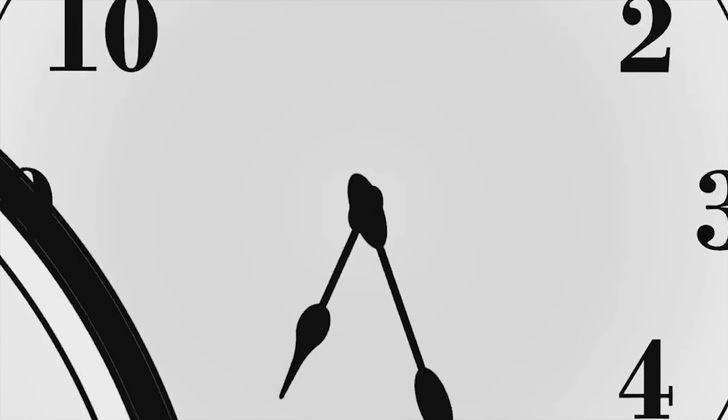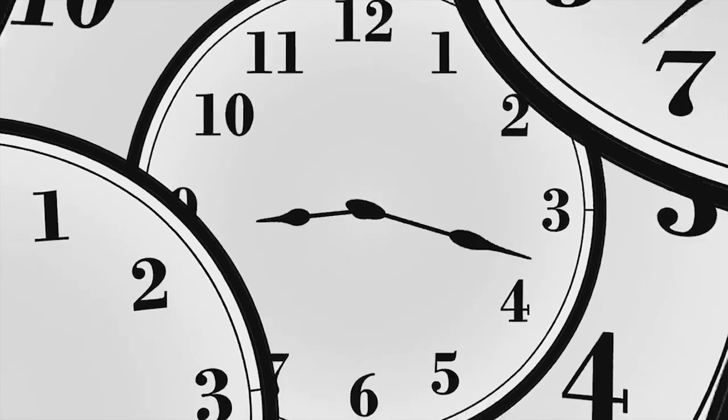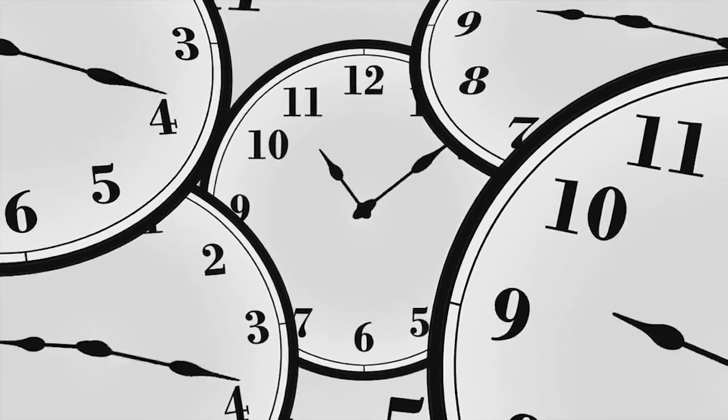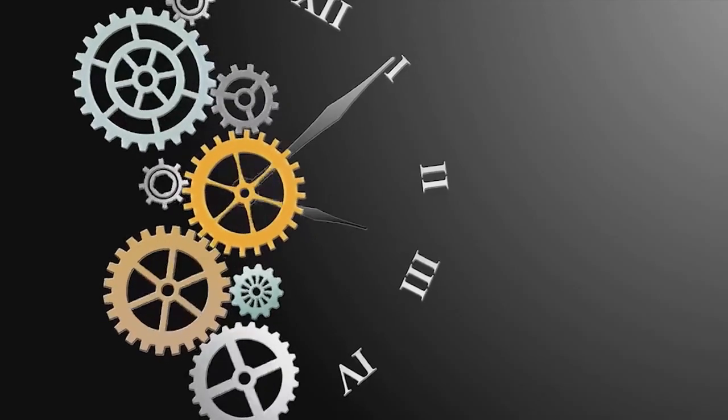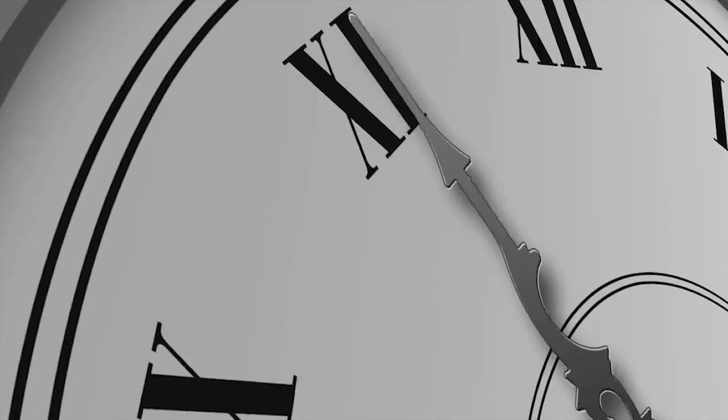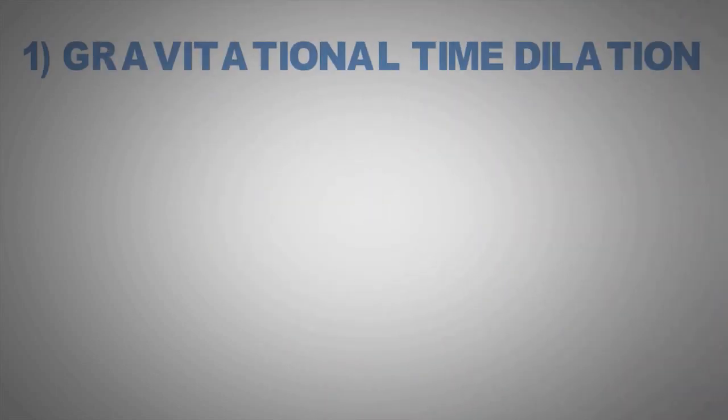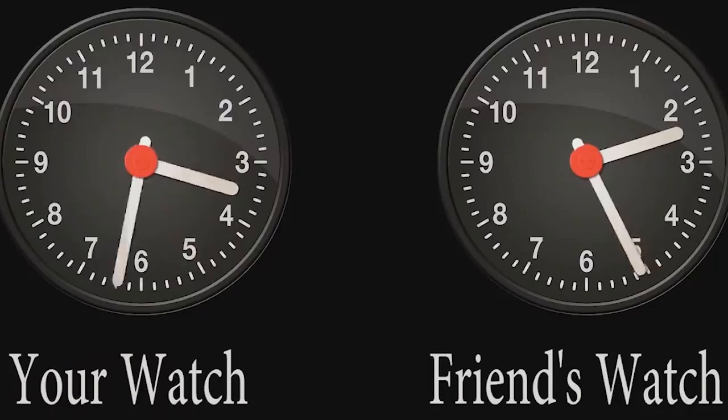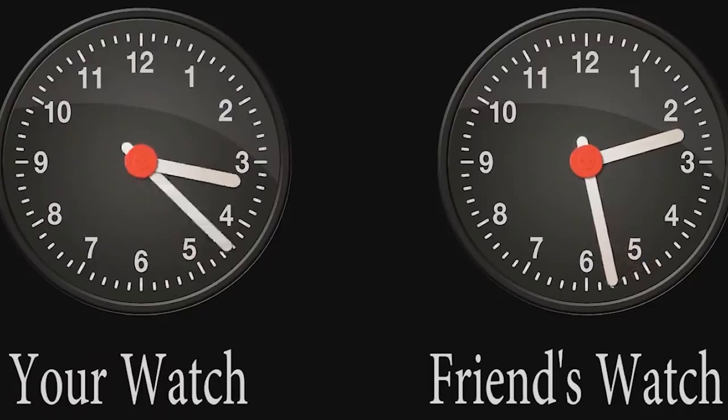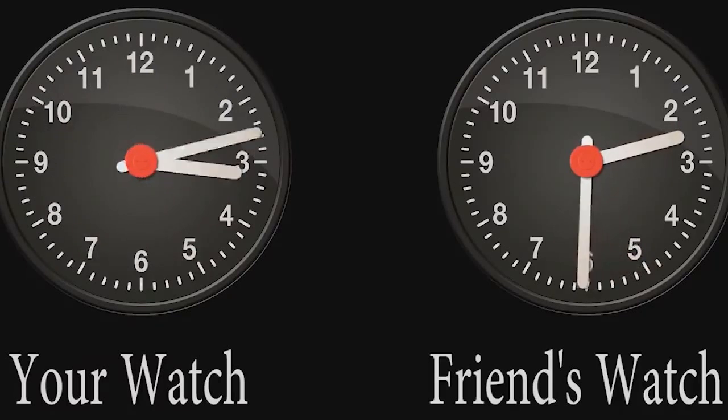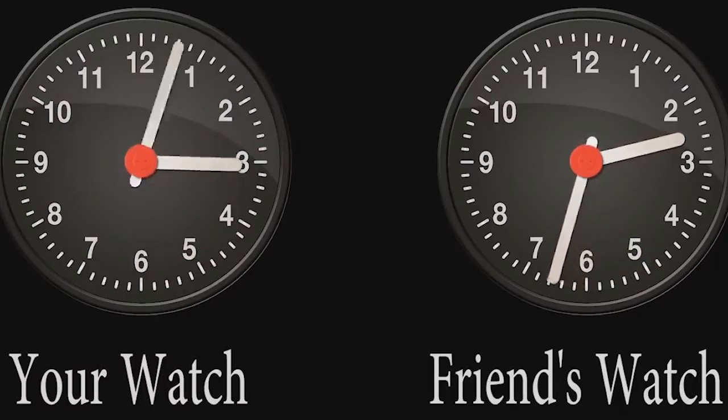Time is not absolute, and it is also relative. That is, it depends upon the frame of reference or a point in space-time. There are two types of time dilation. The first one is gravitational time dilation. Time begins to slow down for an individual who tends to be in a region having strong gravitational pull. This means that clocks in regions with strong gravitational pull pass more slowly than ones far away from such regions.